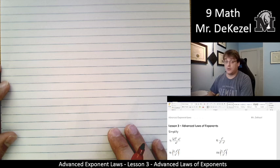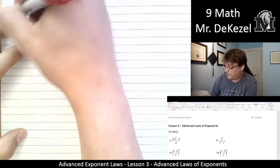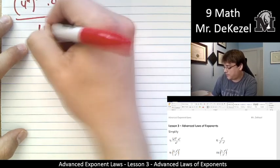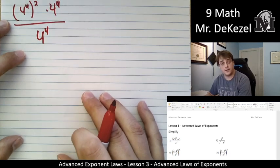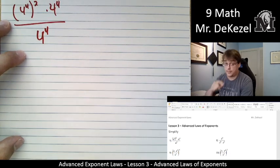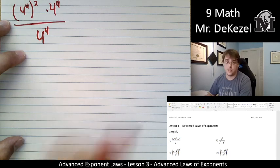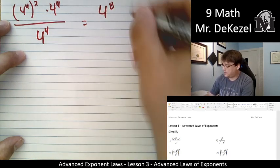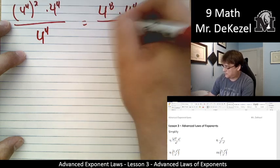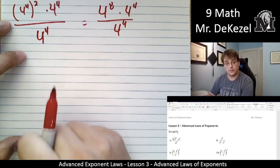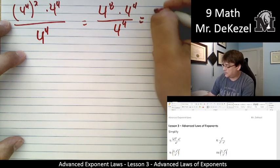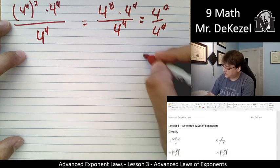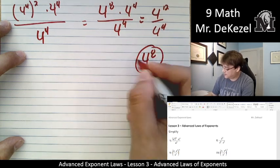First one: we have four to the power of four, squared, times four to the power of four, divided by four to the power of four. So we're going to do the top and the bottom separately. There's no brackets with anything within them, so we're going to do the exponent first — that's four to the power of eight, since four times two is eight. We add when we're multiplying, so that's four to the power of 12 over four to the power of four.